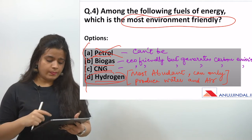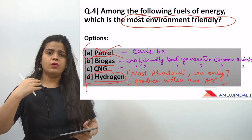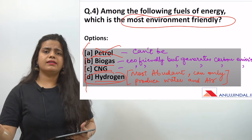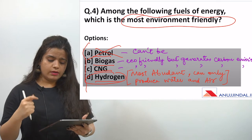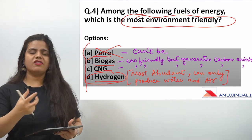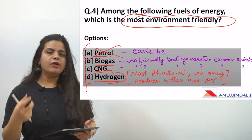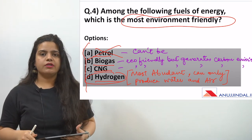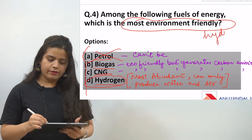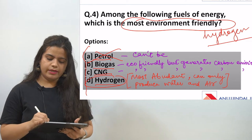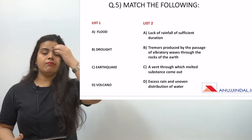Comparing CNG and biogas with hydrogen, hydrogen has a much greater energy volume and — crucially — it only produces water and air, never carbon emissions. That is the key reason why hydrogen is the most environment-friendly fuel of all the options. So our answer is (D) hydrogen.